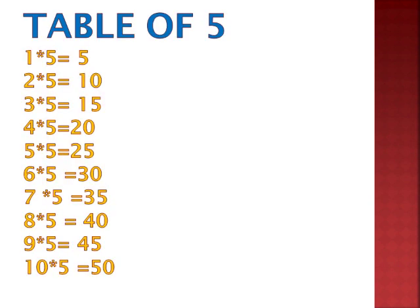Now we will do the table of 5. 1 five is 5, 2 fives are 10, 3 fives are 15, 4 fives are 20, 5 fives are 25. Then 6 fives are 30, 7 fives are 35, 8 fives are 40, 9 fives are 45, 10 fives are 50.